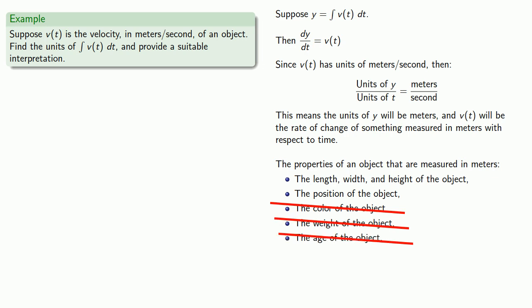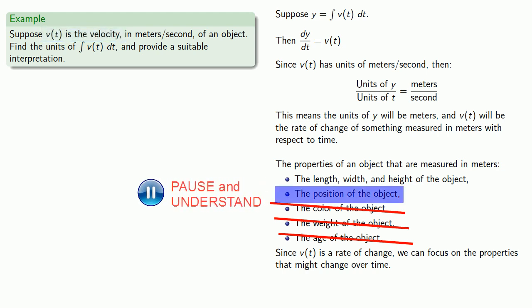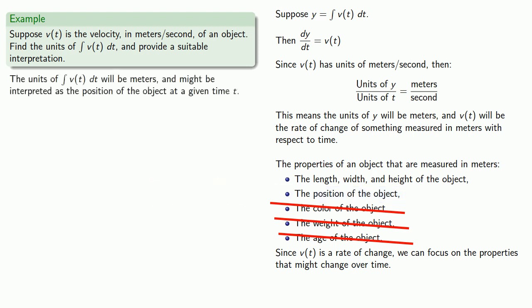Now the other thing to keep in mind is that since v of t is a rate of change, we can focus on the properties that might change over time. And since v of t is the velocity of an object, the thing that could change with respect to time is the position. So the units of the antiderivative will be meters, and the antiderivative itself might be interpreted as the position of the object at a given time t.